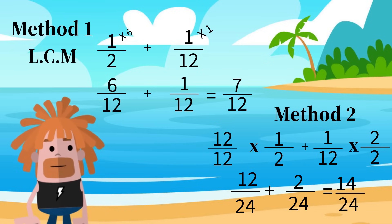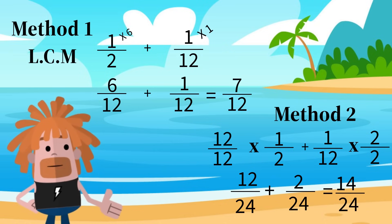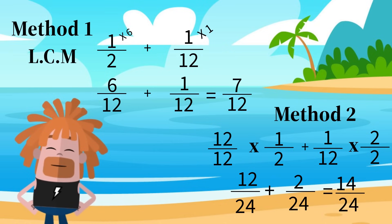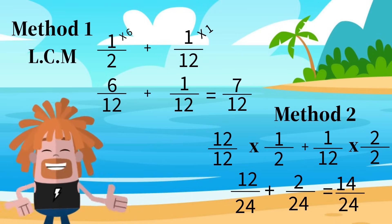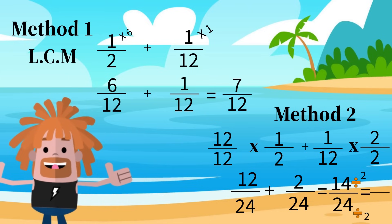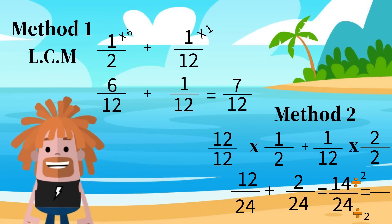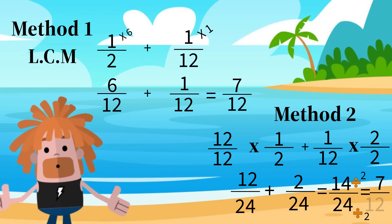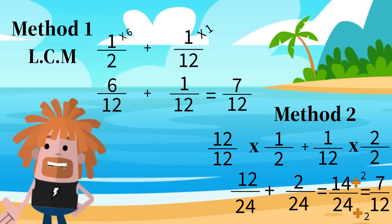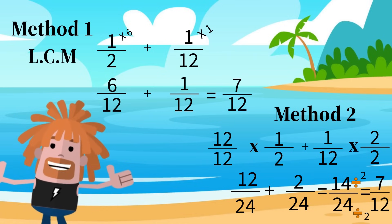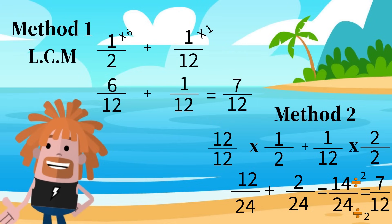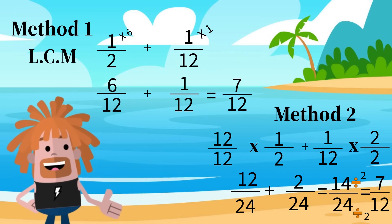This can be simplified. To simplify a fraction, you have to find a number that can go into both the numerator and the denominator without leaving a remainder. 2 can go into both the numerator and the denominator without a remainder: 2 into 14 is 7, and 2 into 24 is 12. The answer is 14 twenty-fourths, or 7 twelfths. If you use this method, you may need to simplify at the end to get your answer in lowest terms.